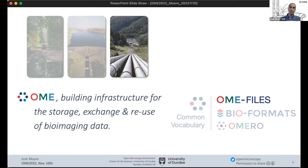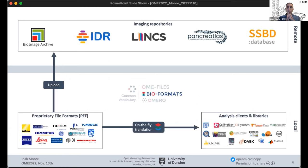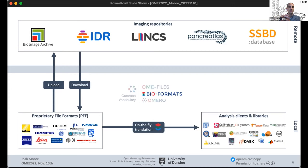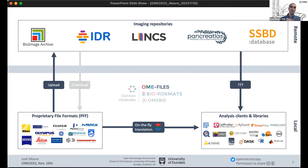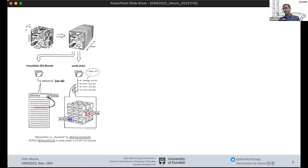We're going to get into the details from here. The question we're asking is: whereas the current state of the art lets you upload proprietary file formats to repositories like the IDR or the bio image archive, your users are left downloading those files and still need to perform some kind of translation — for example with Bio-Formats — to get their work done. The hope is that as a community we could agree on a common specification, so accessing data in these reservoirs no longer requires that — that we have better pipes.